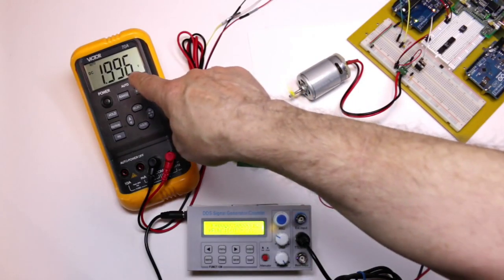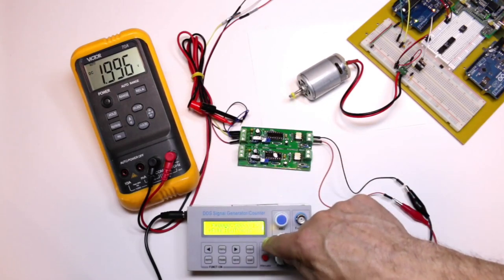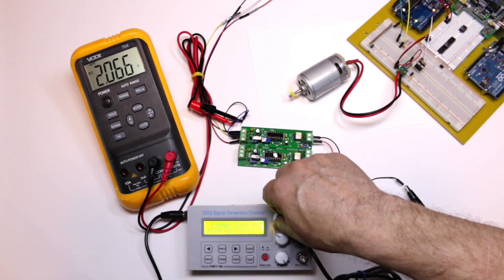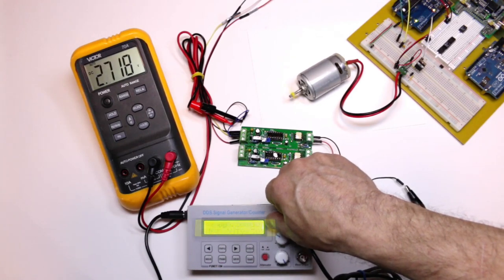As you may see, the voltmeter follows quite accurately the PWM's duty cycle, and the motor speed varies accordingly.